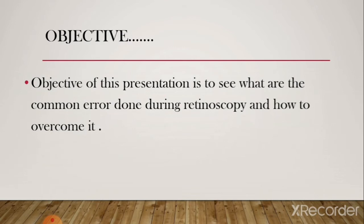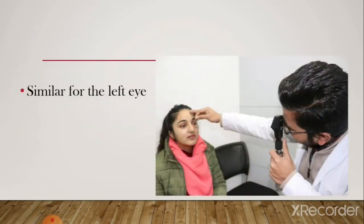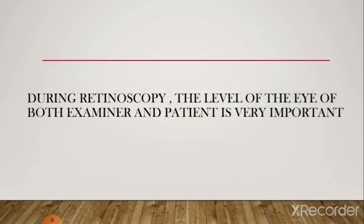The objective of this presentation is to find out the common mistakes made by the examiner so that, by correcting those mistakes, the accuracy of retinoscopy can be achieved. The first error is that the examiner should use his right eye and right hand to examine the patient's right eye, and his left eye and left hand to examine the patient's left eye.